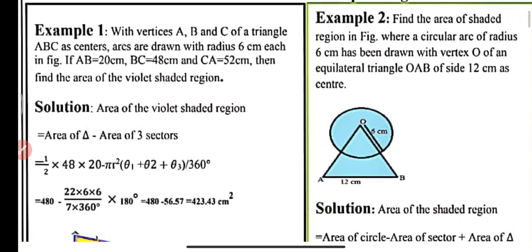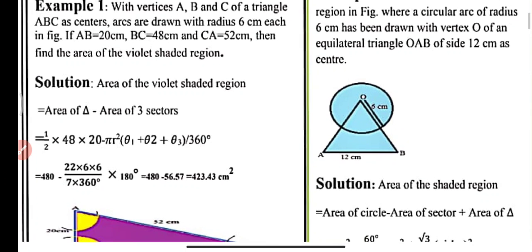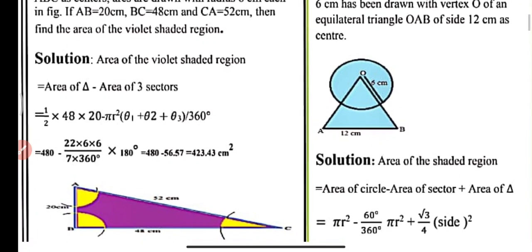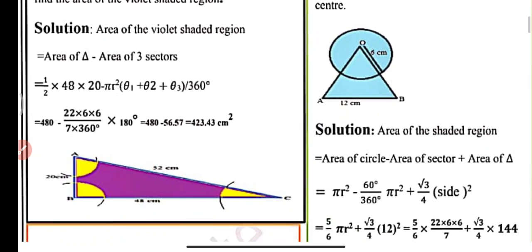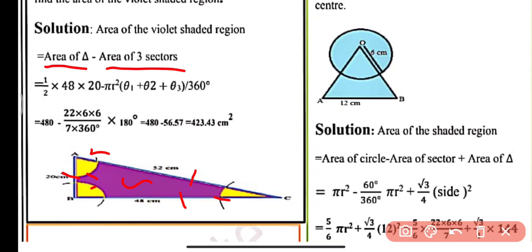With vertices A, B and C of triangle ABC as centers, arcs are drawn with radius 6 cm each. We are given AB equals 20 cm, BC equals 48 cm, and AC equals 52 cm. Arcs are drawn at vertices A, B and C with radius 6 cm forming 3 sectors. We have to find the area of the shaded region, which equals area of triangle minus area of 3 sectors.